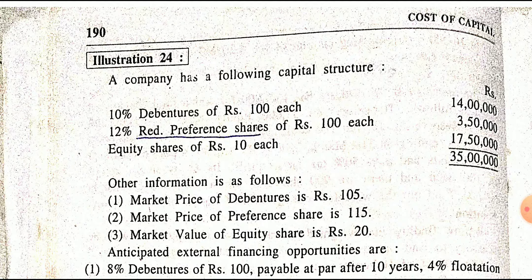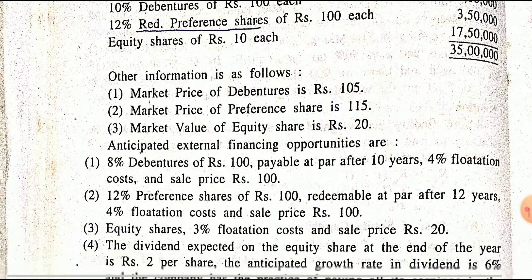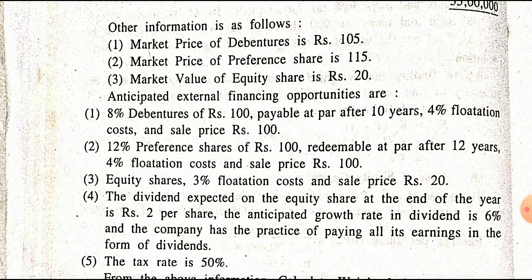Company has the following capital structure: debenture, preference share, equity share, and redeemable preference share. Market price is given for debenture, preference share, and equity share. Additional information: 8% debenture of 100, payable at 10 years — it means it is a redeemable debenture.